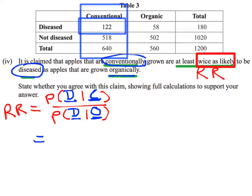we want to know the chance of it being diseased. We've got 122 conventionally grown apples that are diseased out of 640 conventionally grown apples. So that conditional probability is 122 over 640.